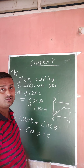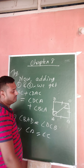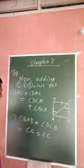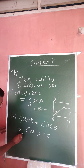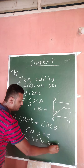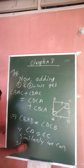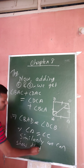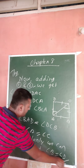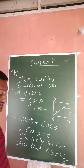Similarly, you can prove angle B equals angle D by drawing diagonal BD and using the same alternate interior angles property. So in a parallelogram, all opposite angles are equal.